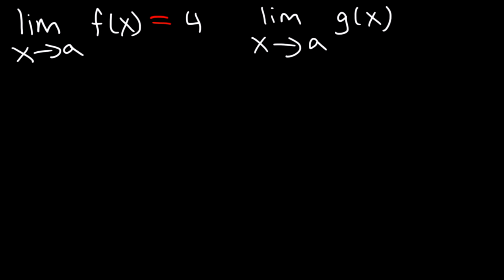Now, let's talk about how to evaluate limits using properties of limits. For example, let's say that the limit as x approaches a of the function f of x equals 4, and the limit as x approaches a of the function g of x equals negative 3.